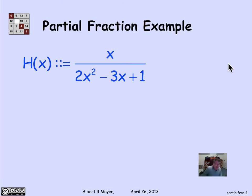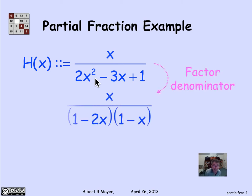The first step is to factor the denominator. You usually factor the denominator into terms of the form (x minus a root), times a constant. But I'm going to do it in a slightly different way — I could find these numbers from the quadratic formula, but I'm going to factor the denominator as (1 minus 2x)(1 minus x), and you can check that that's right.